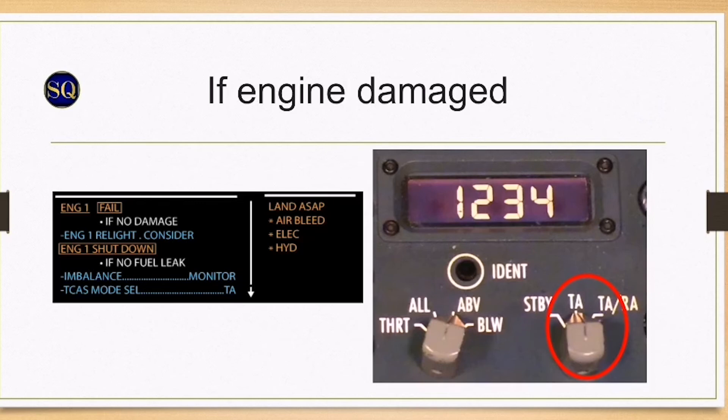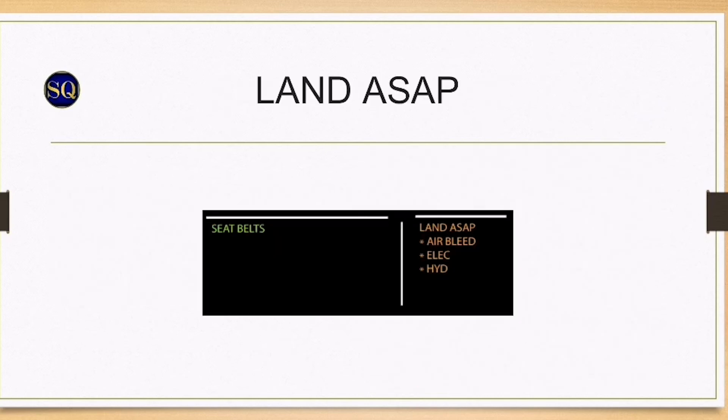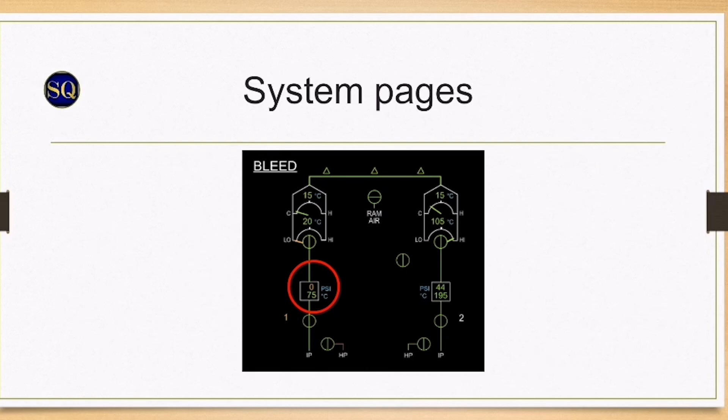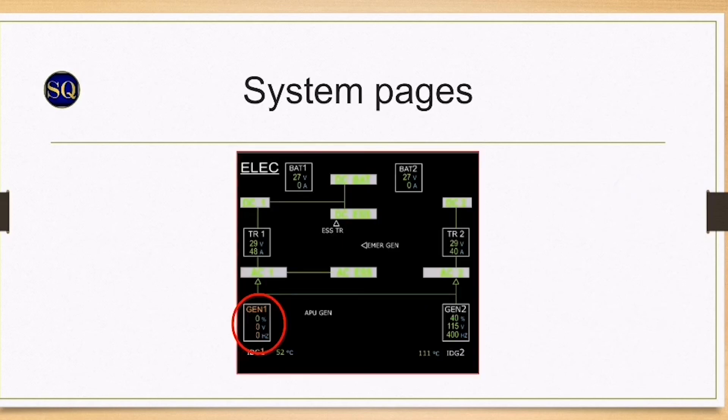Clear the engine fail. Land ASAP in amber is advised to the crew to consider landing at the nearest suitable airport. Let's have a look at the system pages. Only one bleed system available, which will affect the aircraft anti-ice capability. Only one generator supplying the electrical network. Consider starting the APU. Failed engine hydraulic system is powered by the PTU.